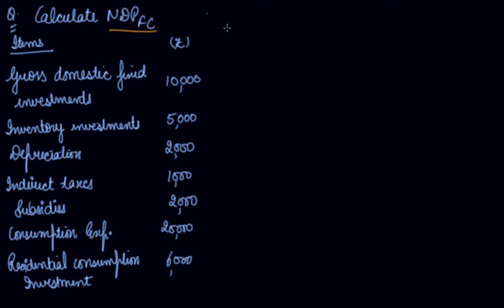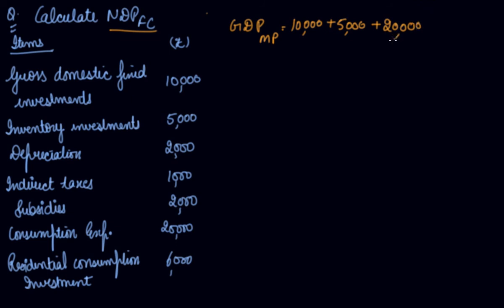From the expenditure method you get GDP at MP, adding investments, private consumption expenditure, government consumption expenditure, and net exports. Gross domestic fixed investment is 10,000 and inventory investment is 5,000. Investments include fixed investments plus inventory investments. Consumption expenditure is 20,000. Note that residential consumption investment is already included in gross domestic fixed investment, so it is not counted again.